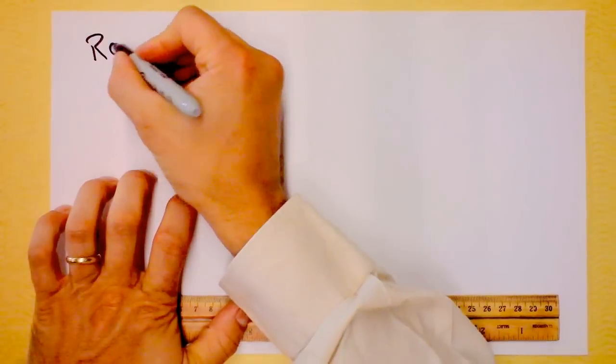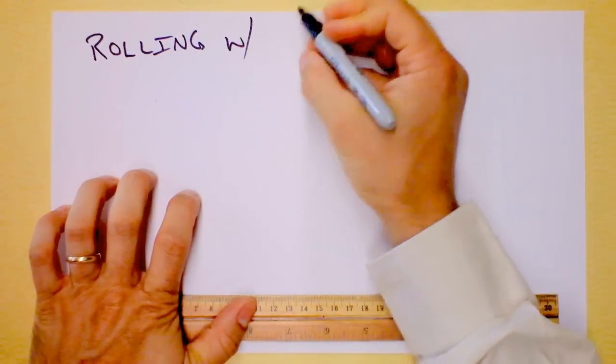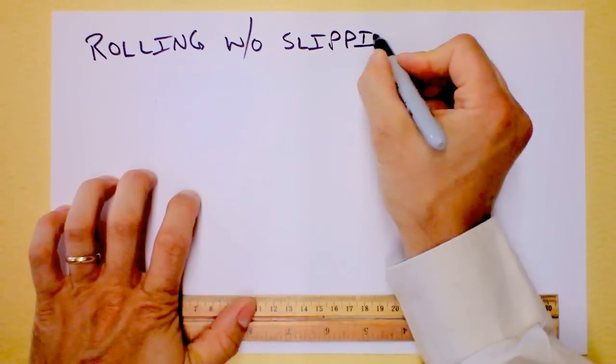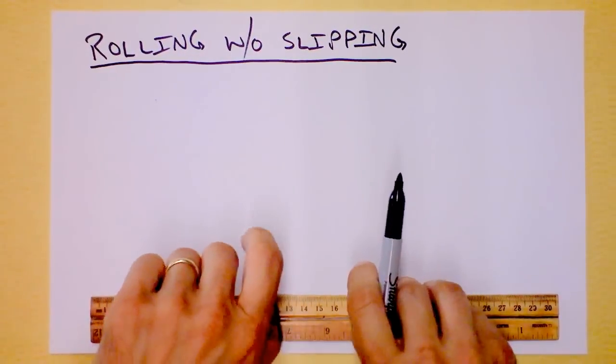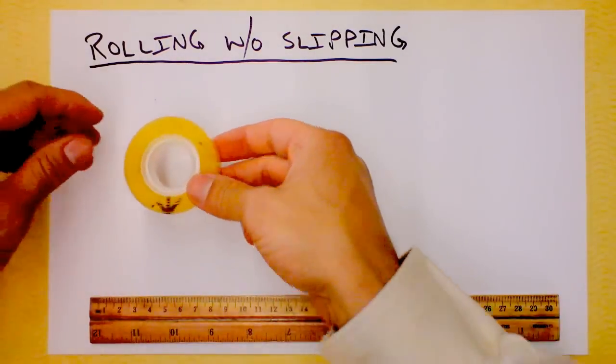I want to talk to you today about rolling without slipping. This is a super special type of circular motion. There are two general classes of motion.